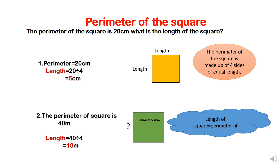Let's do another example. Here, the perimeter of the square is 40 meters and again we have to find the length. To find the length of the square, we use the formula: perimeter divided by 4. So, length equals 40 divided by 4, which gives us 10 meters. So, the length of the square is 10 meters.